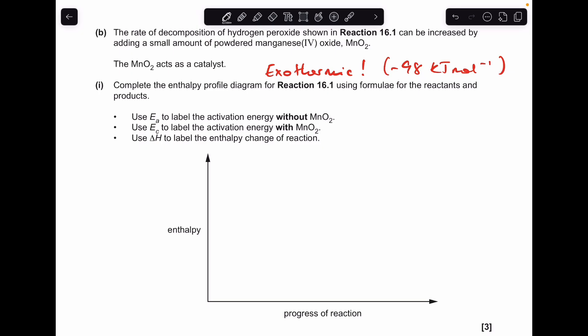Part B now, so we're going to do the enthalpy profile diagram for reaction 16.1. Now, we've just calculated in part A that it was an exothermic reaction. Remember, ΔH came out at -98 kilojoules per mole. So obviously, that's going to influence the shape of the diagram. So I'll just explain this part, and then we'll put the second curve in.